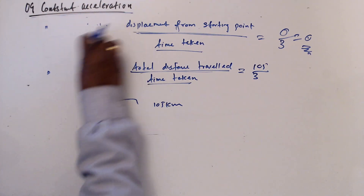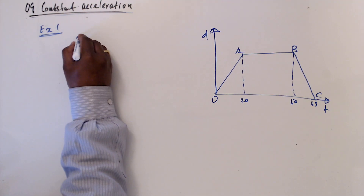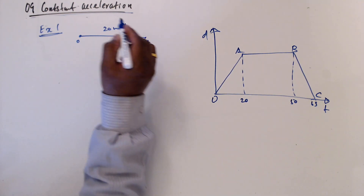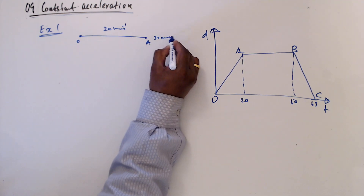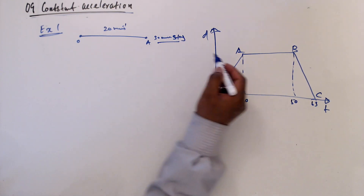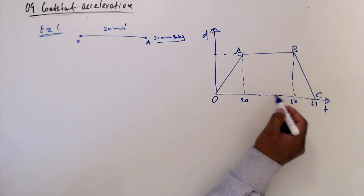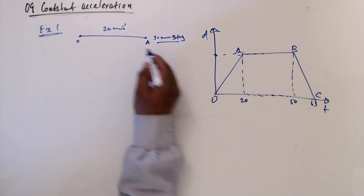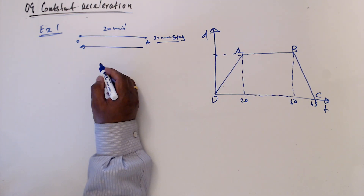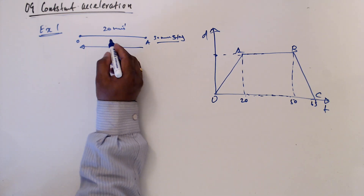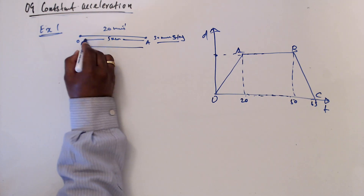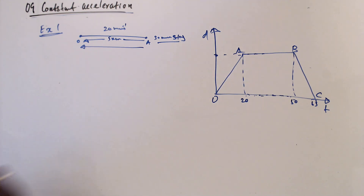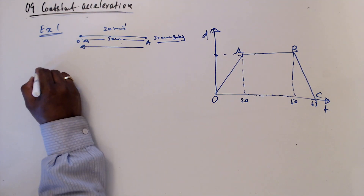Let's discuss Example 1. A person travels from O to A in 20 minutes, stays at A for 30 minutes, then comes back. The distance each way is 5 kilometers. Question one: work out the average velocity for each stage in kilometers per hour. For the O to A journey, average velocity equals displacement divided by time.